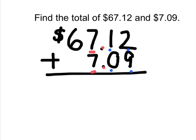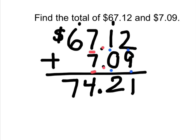All I gotta do now is add and carry when necessary. So 2 plus 9 is 11, carry the 1. 1 plus 1 plus 0 is 2. The decimal comes straight down into the answer. 7 plus 7 is 14, carry the 1. 6 plus 1 is 7. And this is money, so I can't forget to label my answer with a dollar sign.